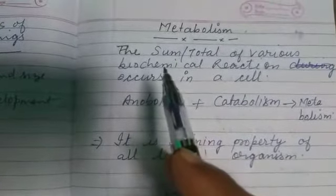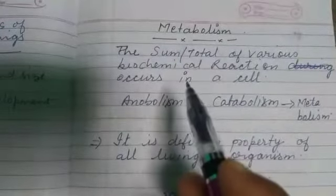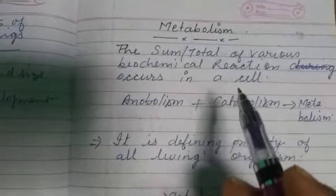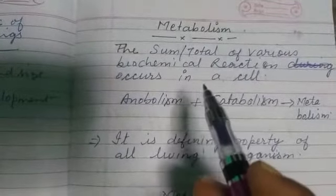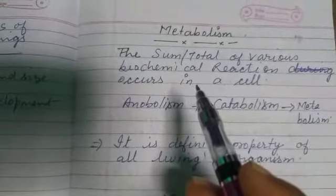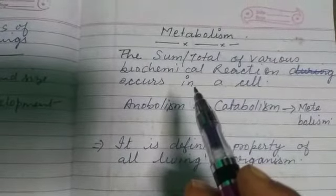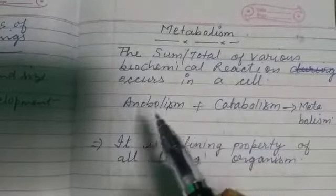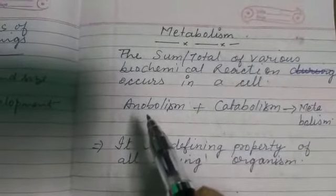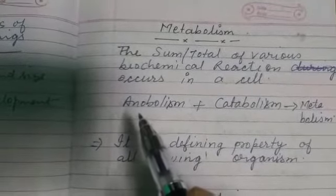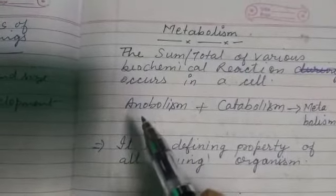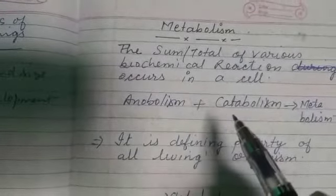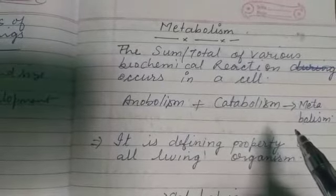The sum or total of various biochemical reactions that occur in a cell — whatever biochemical reactions take place in a cell — is called Metabolism. In another word, we can say that the sum of anabolism and catabolism is called Metabolism.